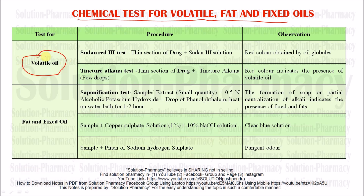First, volatile oil identification test. The first test is Sudan Red 3 test. What we do is take the sample drug — the crude drug — cut it and add the Sudan 3 solution. What we will observe is red color obtained by the oil globules, meaning in that section where volatile oil is present, the oil globules will become red. This is the Sudan Red 3 test. Also, add Tincture Alkana — a few drops — and when we see it in the microscope, red color indicates the presence of volatile oil. This is the Sudan Red 3 test and Tincture Alkana test for identification of volatile oil.